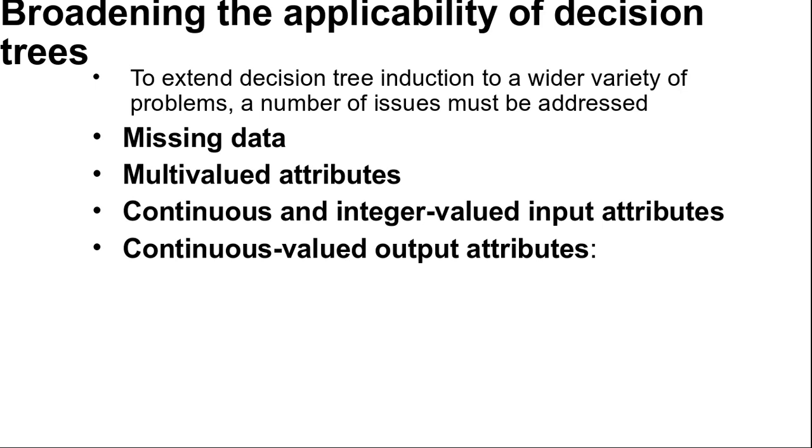In many areas of industry and commerce, decision trees are usually the first method tried when a classification method is to be extracted from a data set. One important property of decision trees is that it is possible for a human to understand the reason for the output of the learning algorithm. That is all about decision trees. We completed the decision tree topic. Session ends here. Thank you.